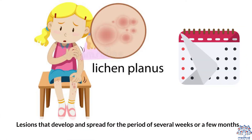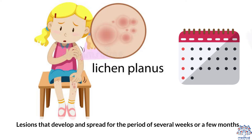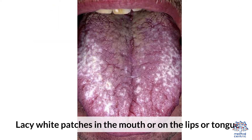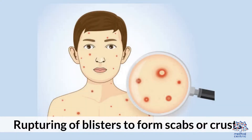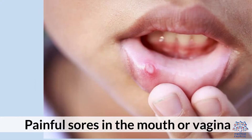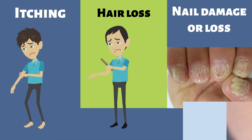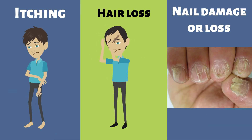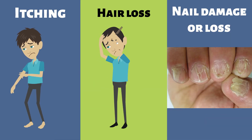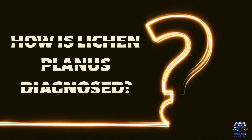Other symptoms include lesions that develop and spread over several weeks or a few months; lacy white patches in the mouth or on the lips or tongue; rupturing of blisters to form scabs or crusts; painful sores in the mouth or vagina; itching; hair loss; and nail damage or loss.